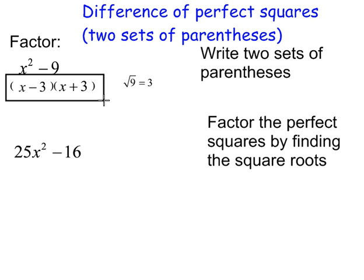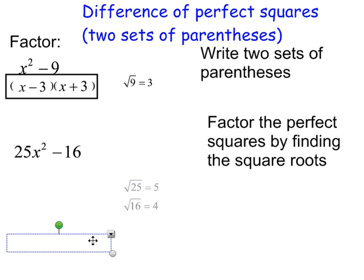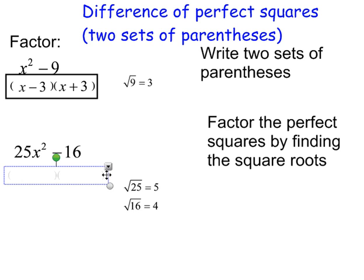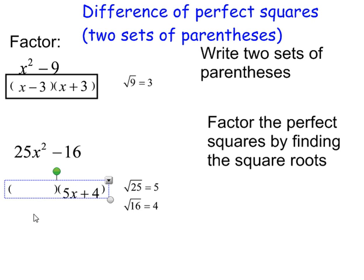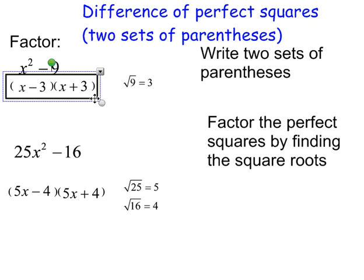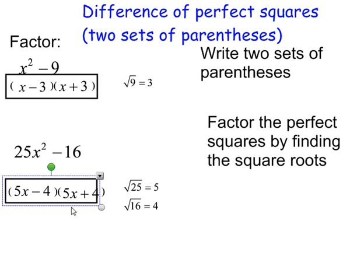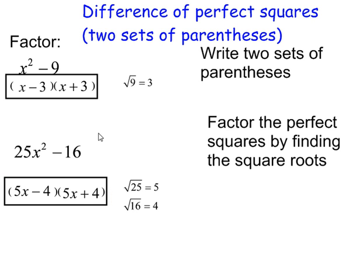The second one is 25x squared minus 16. Take the square roots: the square root of 25 is 5, and the square root of 16 is 4. Write your two sets of parentheses. Since the square root of 25 is 5, I'll have 5x and 5x. So the answer is 5x plus 4 and 5x minus 4. That's my final answer, and you can check by foiling it out to make sure it comes back to the original.